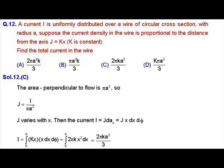MCQ question number 12. In this question, we have been given that a current i is uniformly distributed over a wire of circular cross section with radius a. Suppose the current density in the wire is proportional to the distance from the axis and it is expressed as j equals kx where k is a constant. We have been asked to calculate the total current present in the wire.